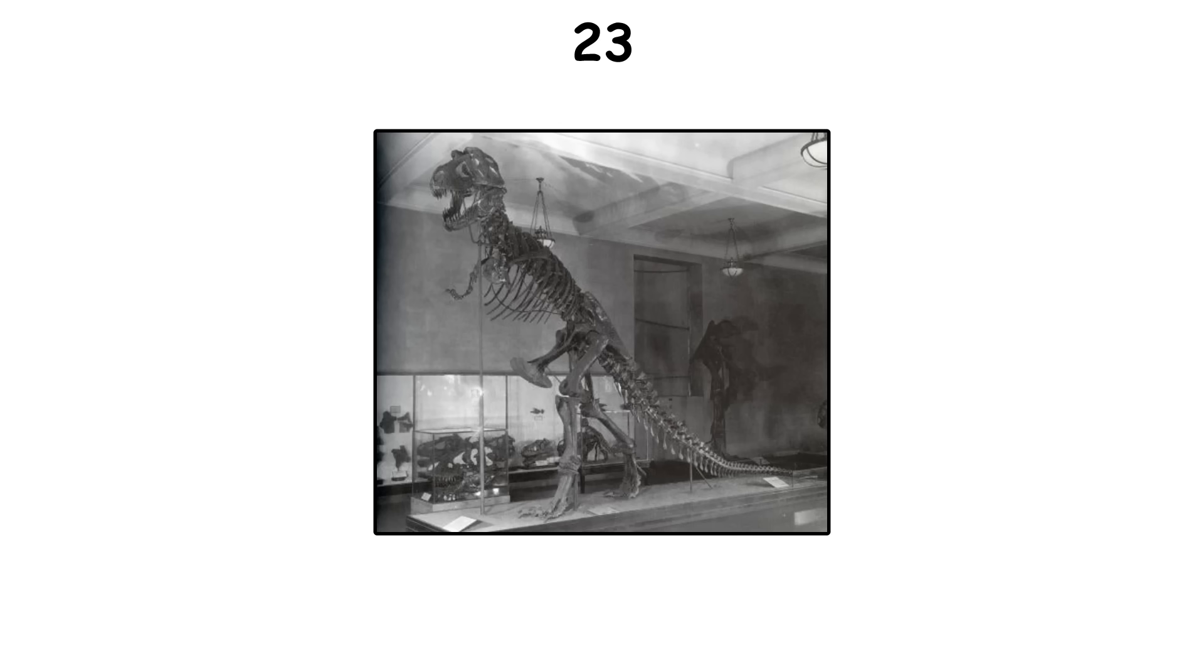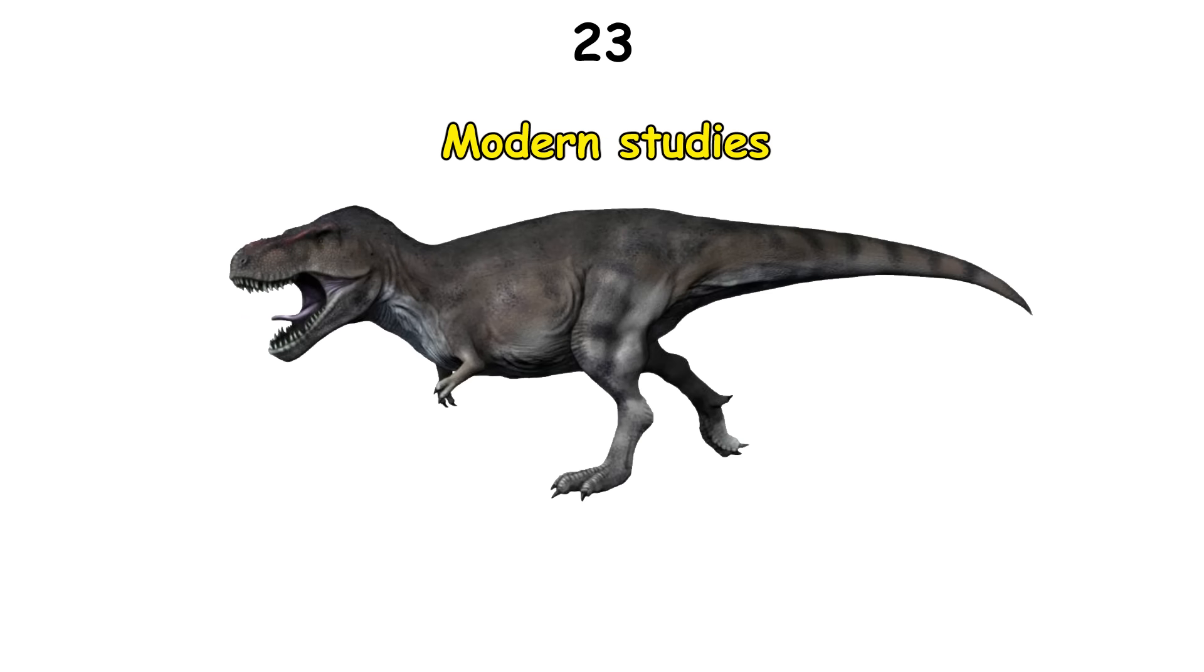Early museum displays showed T. rex standing upright with its tail touching the ground, like a Godzilla pose, but that's anatomically wrong. Modern studies show T. rex held its spine horizontal and tail straight out for balance.